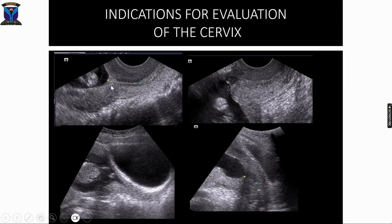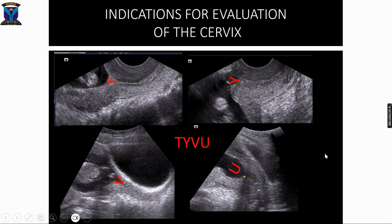Here you can see a T-shaped internal os, Y-shaped internal os, V-shaped internal os, and U-shaped internal os. As far as the cervix is concerned, always trust your vaginal ultrasound. Thank you very much.